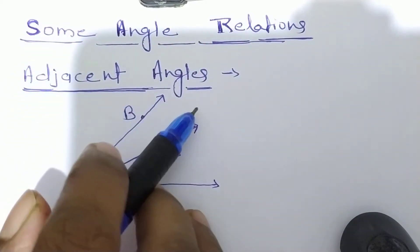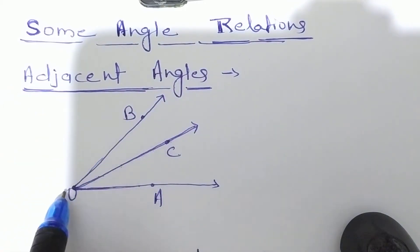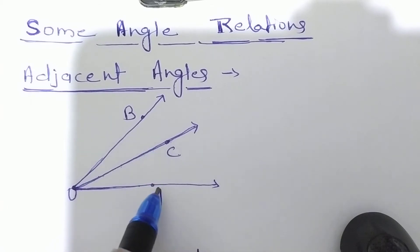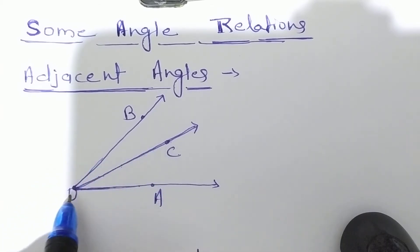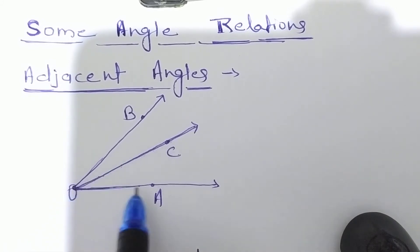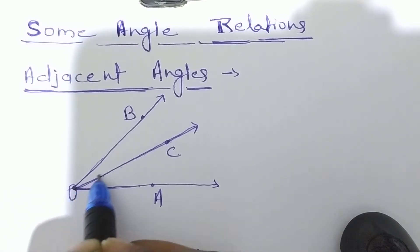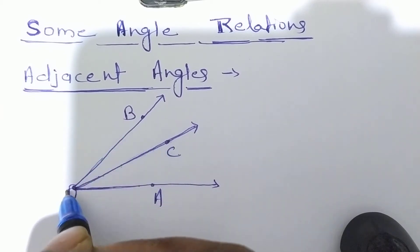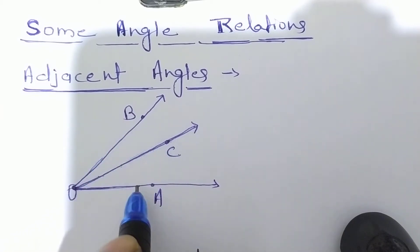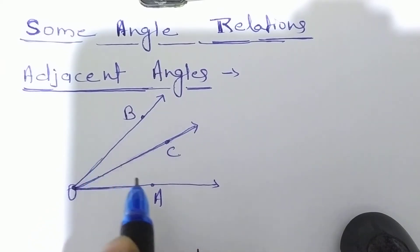First of all, adjacent angles. Here we have two angles: angle BOC and angle AOC. The two angles have a common vertex O and one common arm OC, and two uncommon arms OB and OA. So, two angles are called adjacent angles.